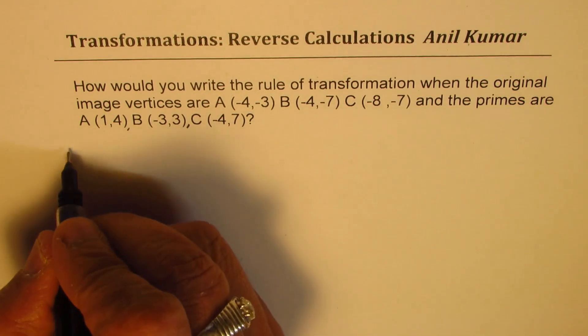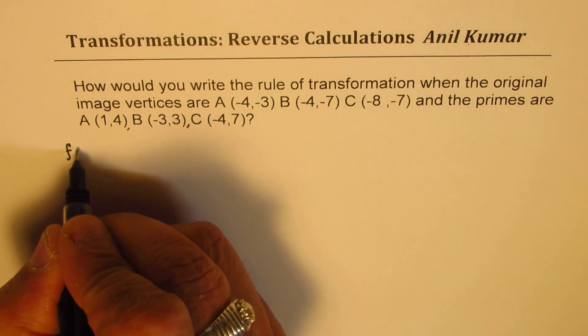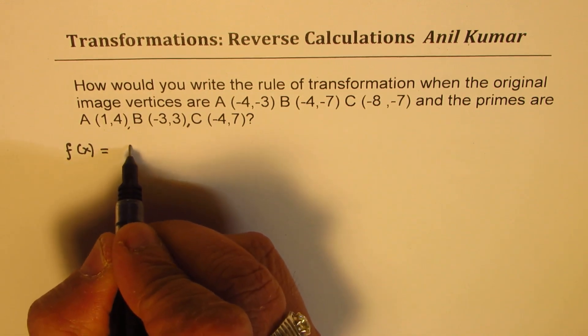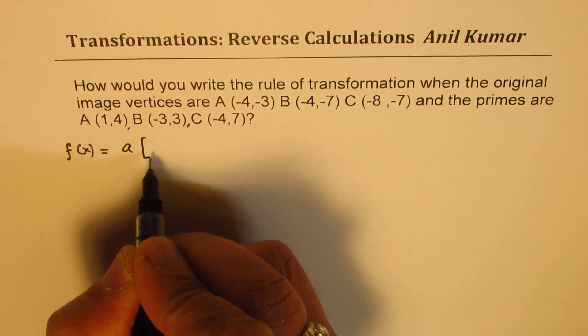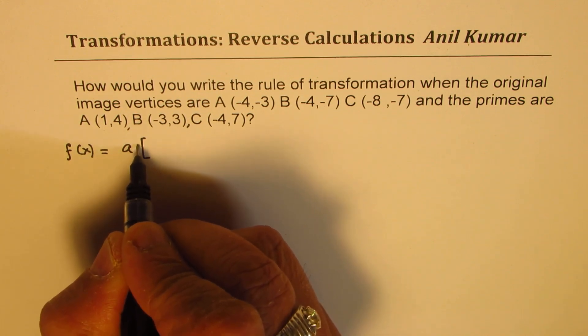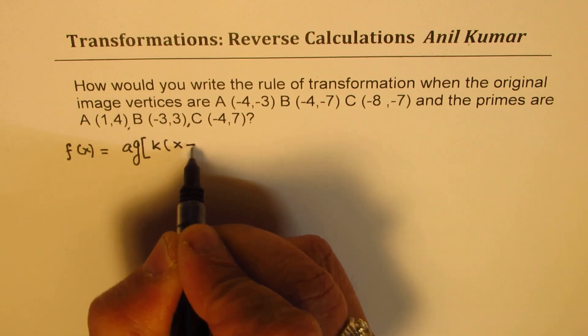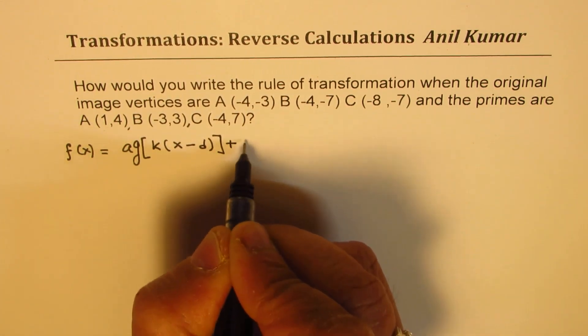Now we'll assume the function f(x) as the transform function, so we could write this as a times g of k times (x - d) plus c.